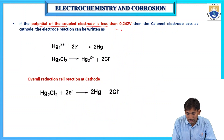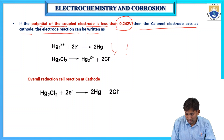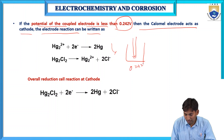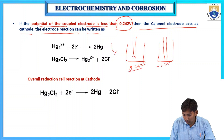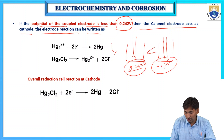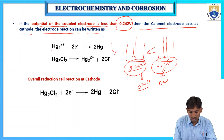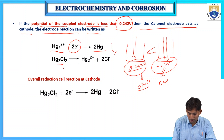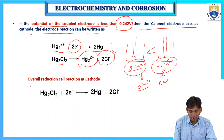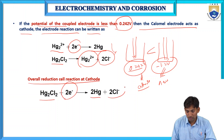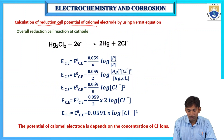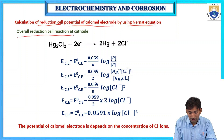If the potential of the coupled electrode is less than 0.24 volts, then the calomel electrode acts as cathode and undergoes reduction. Hg₂²⁺ ions accept 2 electrons from mercury, and mercury chloride dissociates into mercury ions and 2Cl⁻. The overall reduction cell reaction at cathode involves Hg₂Cl₂ being reduced back to mercury.